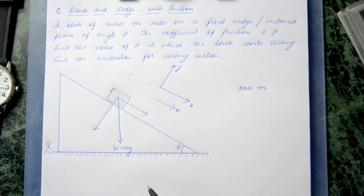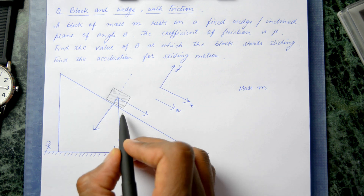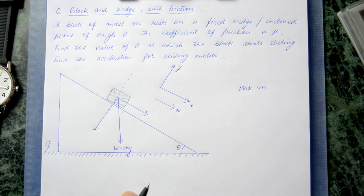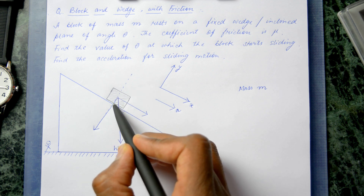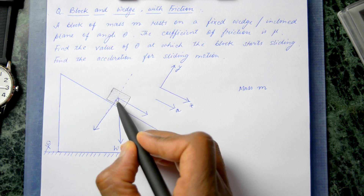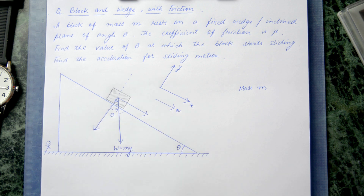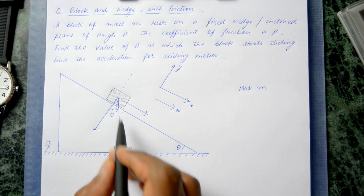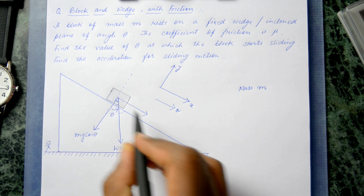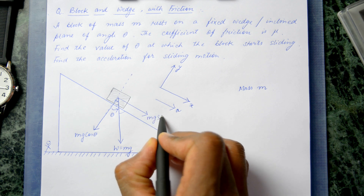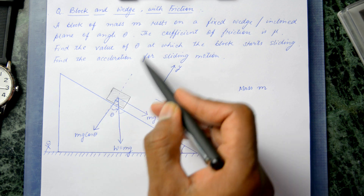Using the geometric construction of the triangle, we can identify the angles. This angle in the triangle is theta, so from the geometry, the y-axis component of weight is mg cosθ and the x-axis component is mg sinθ.